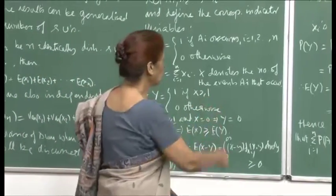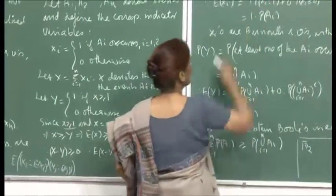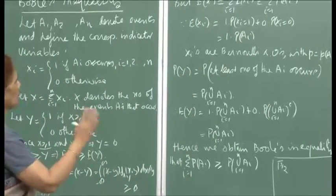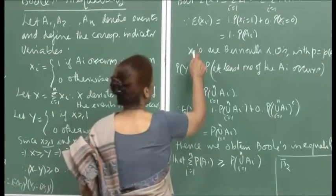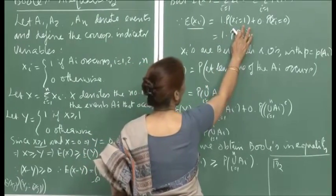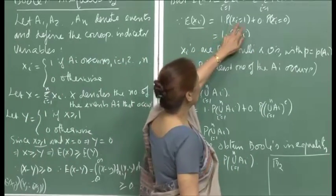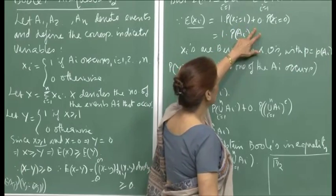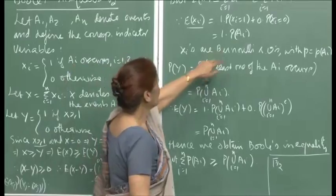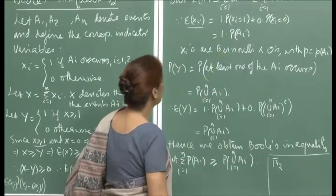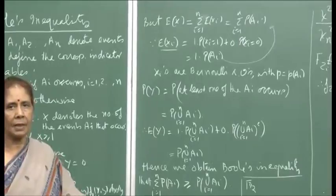That is the important result and through this we derive Boole's inequality. Now look at E(X). Since expectation is linear, I can exchange the expectation and summation signs: E(X) = Σ E(Xi) for i from 1 to n. Now E(Xi) = 1·P(Xi = 1) + 0·P(Xi = 0) = P(Ai), since Xi = 1 corresponds to the occurrence of Ai.